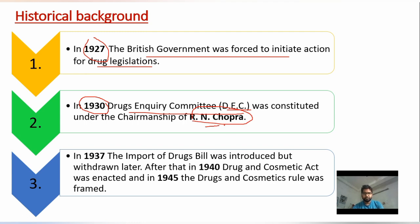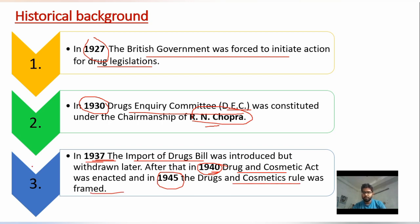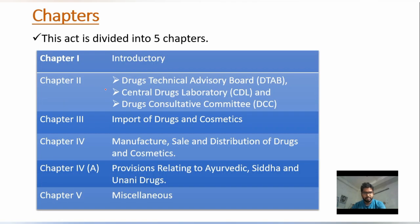In 1937, the Import of Drug Bill was introduced. After that, in 1940, the Drug and Cosmetics Act came into existence, and in 1945 the Drug and Cosmetics Rules were framed. This is the brief historical background of the Drug and Cosmetics Act.